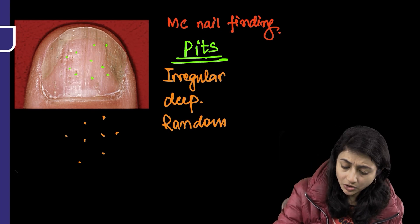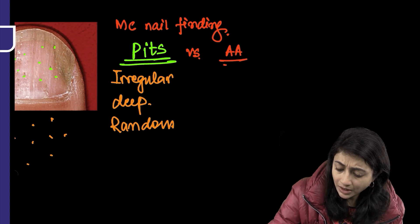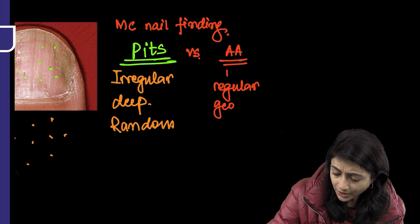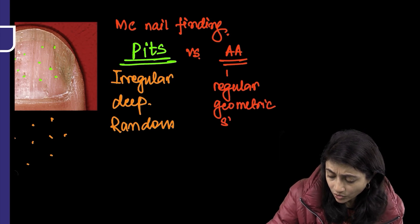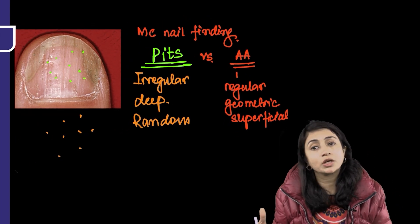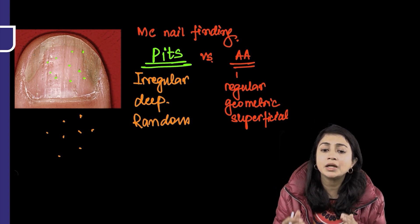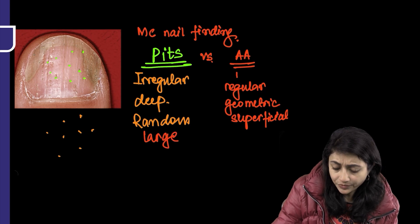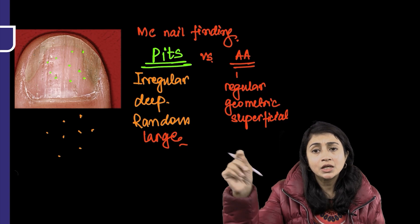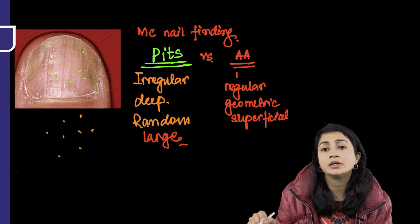Alopecia areata also shows pits, but in alopecia areata the pits are more regular, in a geometric fashion, and are shallow or superficial. So in psoriasis you have deep, random, irregular, large pits. Pits are basically local parakeratosis happening in the nail, leading to chipping, and pits are the most common finding in nail psoriasis.